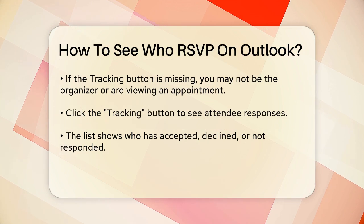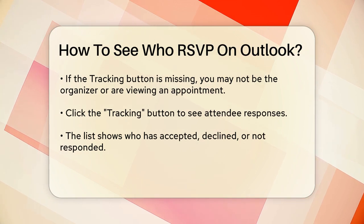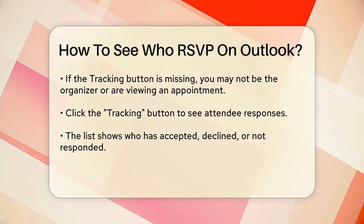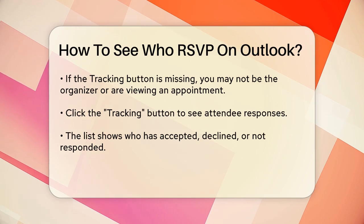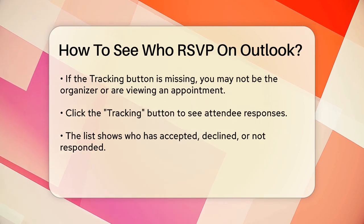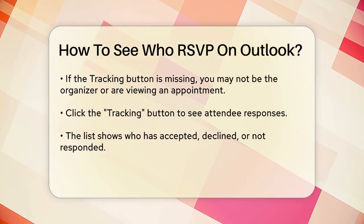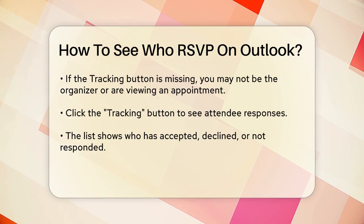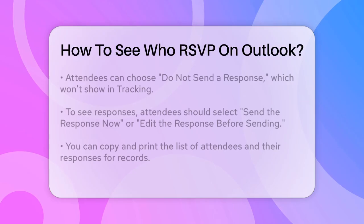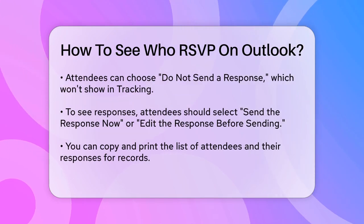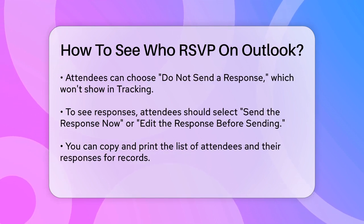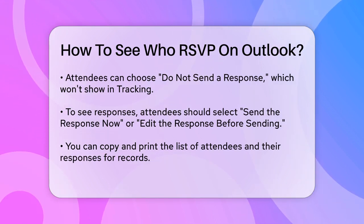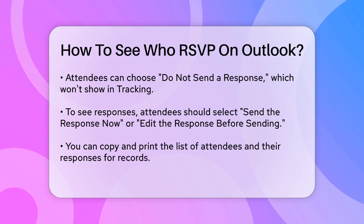However, there's an important detail to note. If an attendee accepts or declines the meeting but chooses the "Do Not Send a Response" option, their response will not be reflected in the Tracking section — it will appear as if they haven't responded at all. To ensure you can see the responses, attendees need to select either "Send the Response Now" or "Edit the Response Before Sending" when they accept or decline the meeting.